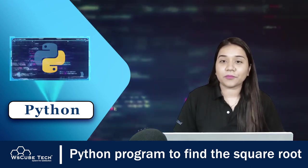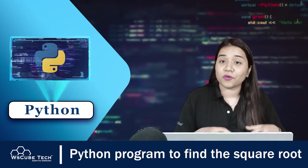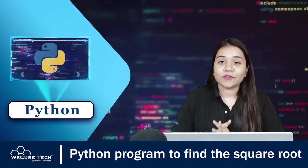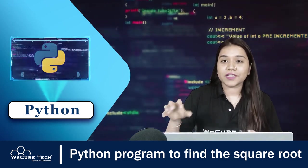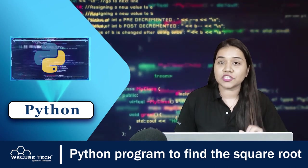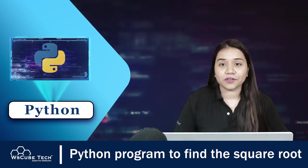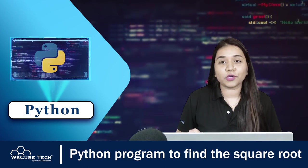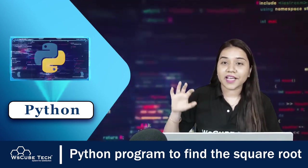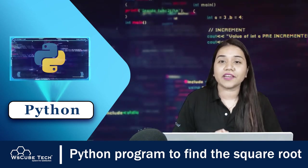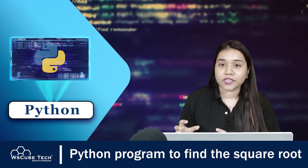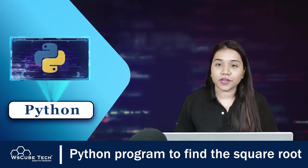For this program, I will be telling you two methods. This program can be written in two methods and we will be discussing both methods one by one. Our first method is going to be with the exponentiation operator. Our second method would be with the math module in Python. Python has a huge library with many modules, and there is one module called the math module which we will be using to find the square root of a number.